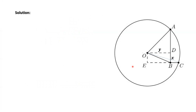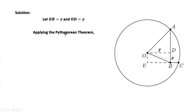We draw a few lines to construct three right triangles: triangle ADO, triangle OEC, and triangle OEB. The question is, what is the value of OB? We define DB equals X, OD equals Y. Therefore, OE equals X and EB equals Y. Apply the Pythagorean theorem.